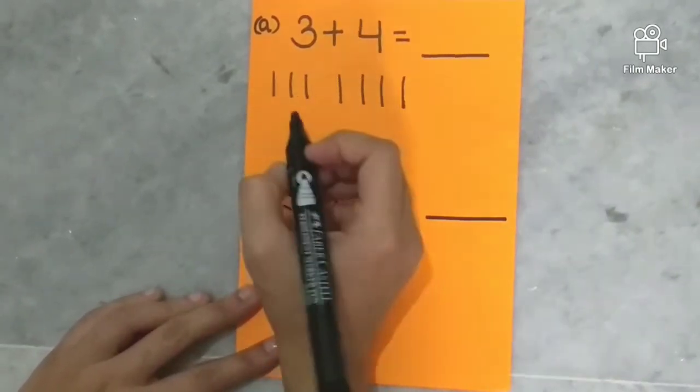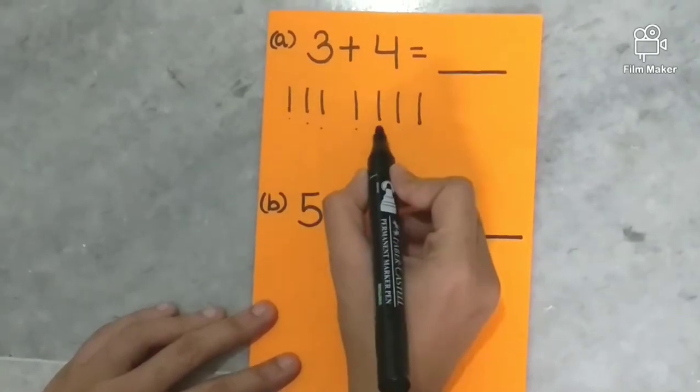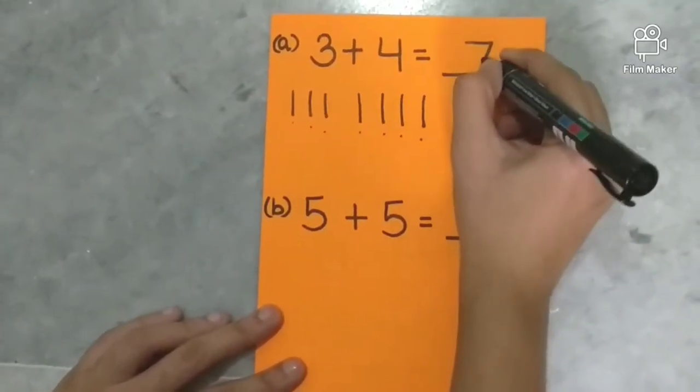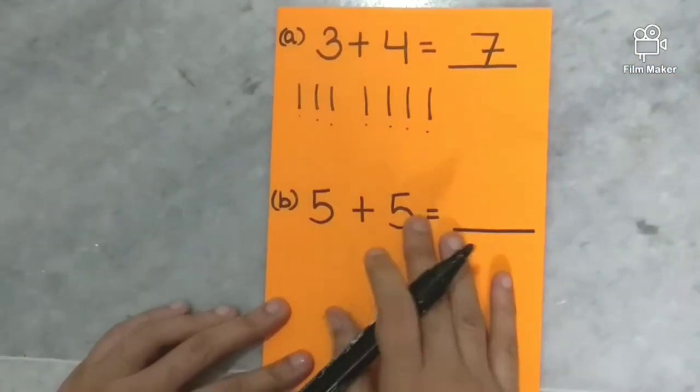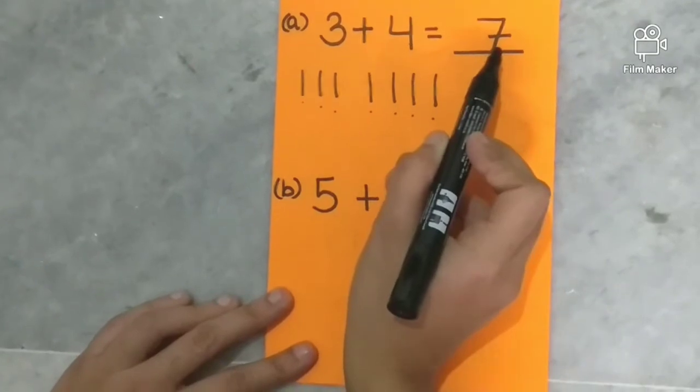Now count all the lines. One, two, three, four, five, six, seven. So how many lines we have in all? Yes, seven. Which means three plus four is equal to seven.